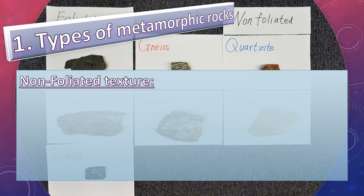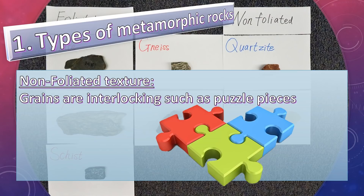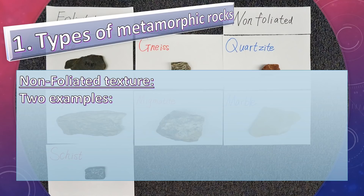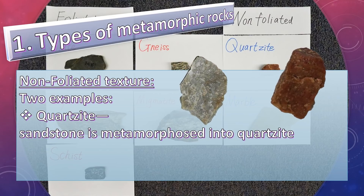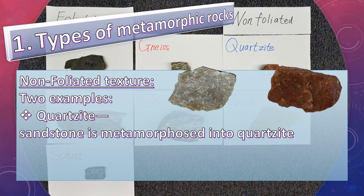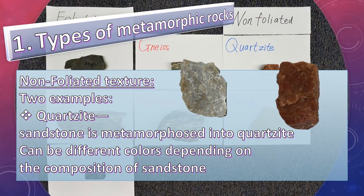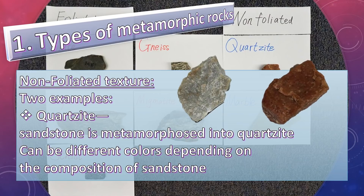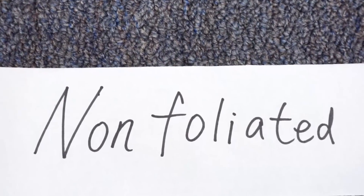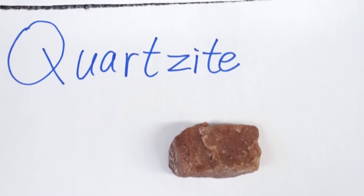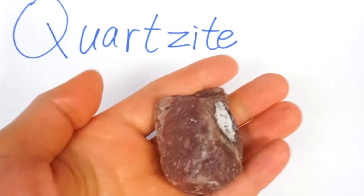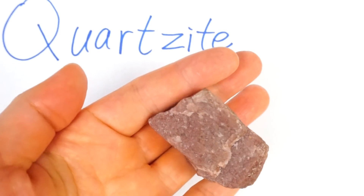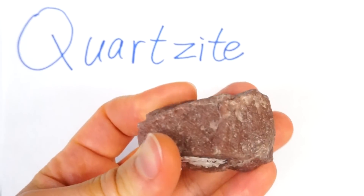Non-foliated texture — grains are interlocking, such as puzzle pieces. Two examples. First, quartzite. Sandstone is metamorphosed into quartzite. It can be different colors depending on the composition of the sandstone. This is a sample of quartzite — non-foliated.